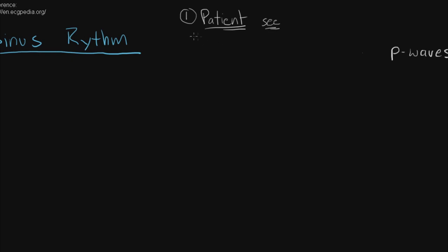Once you've seen your patient, it's always important to make sure that your patient is hemodynamically stable. You want to know your patient's vital signs, make sure there's nothing emergent going on. This is important because if you want to take your time to review an ECG tracing, you want to make sure that your patient is safe and that you actually have the time without doing anything that might adversely affect their health.